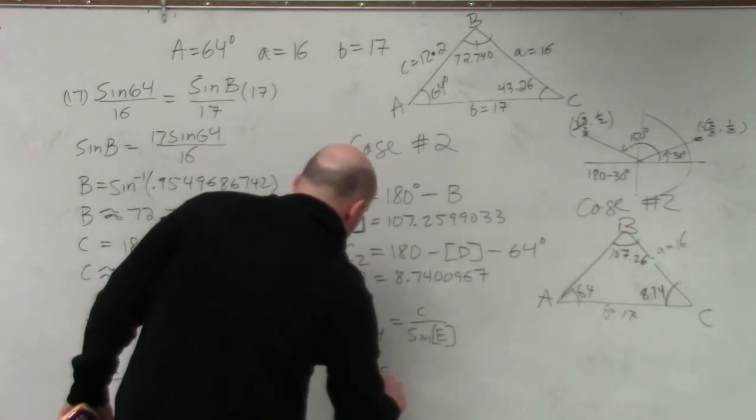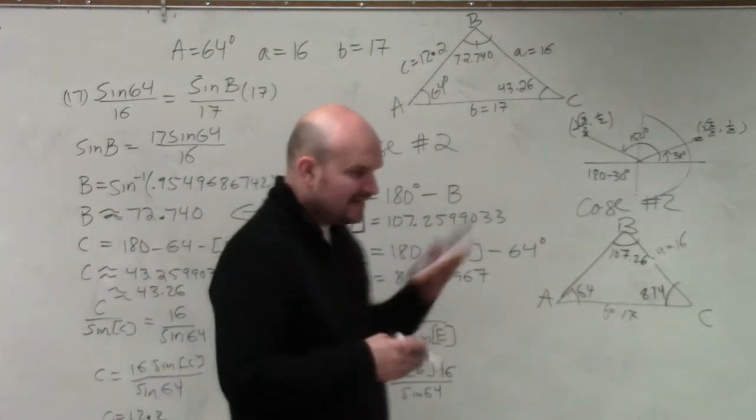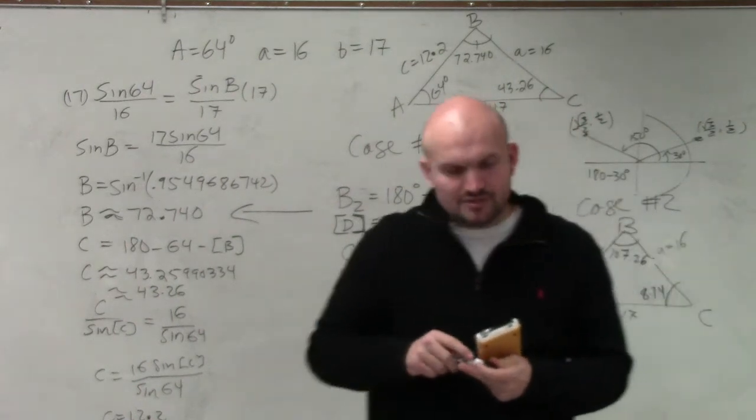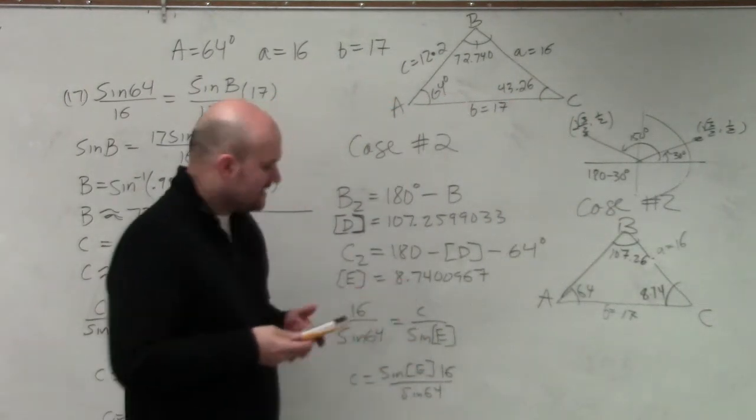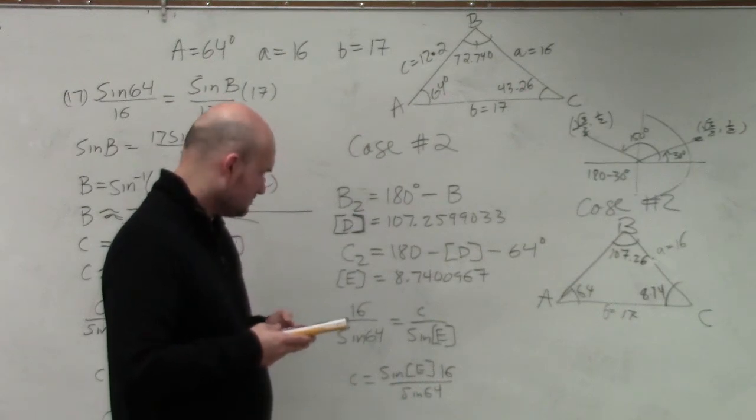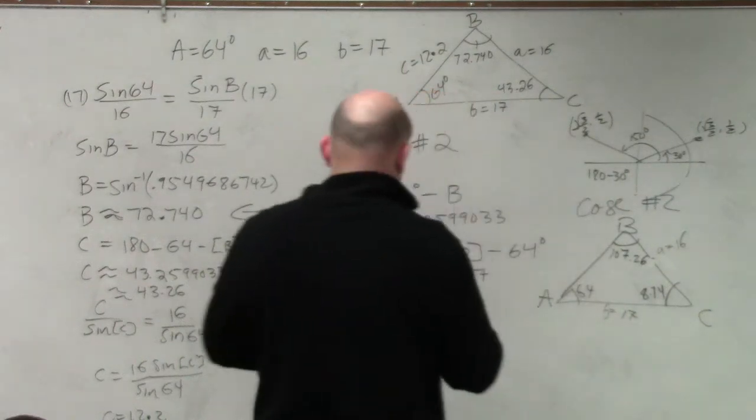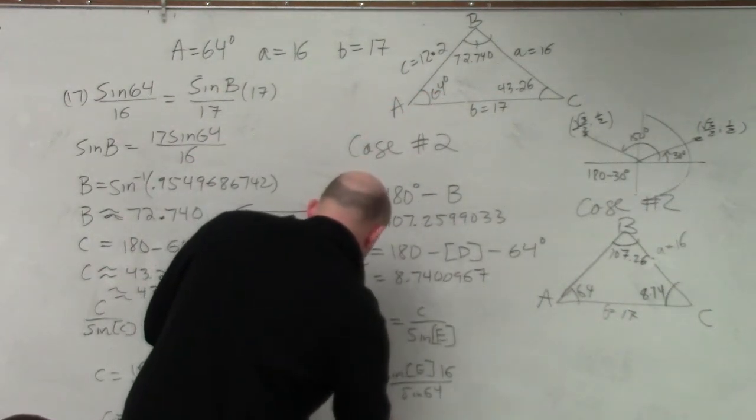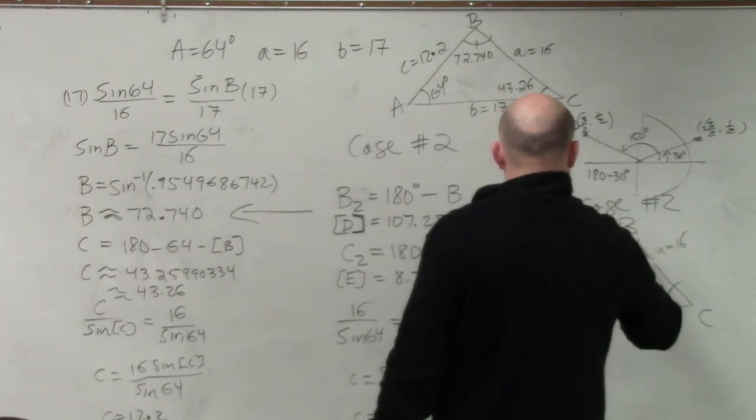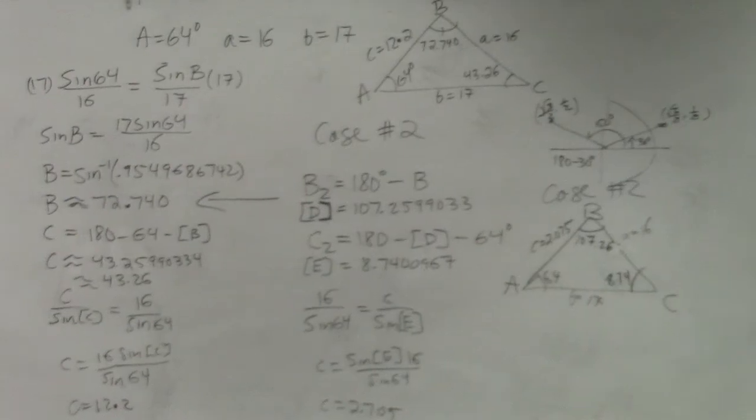So my last answer is going to be sine of E times 16 over the sine of 64. And again, when you guys store things, I think it just makes life easier. However, Angelico, you can write out the whole answer. And that's not a problem at all. But just do not use the rounded answer. I cannot stress that enough. I know it's going to happen. People are going to get the right answer, but they're going to use rounded answers, so they're going to be off. So I do sine of alpha E times 16 divided by the sine of 64. And I get C is equal to 2.705. And there you go.